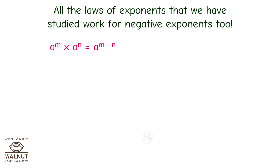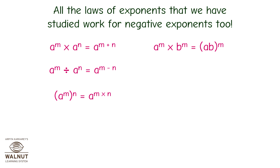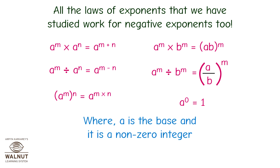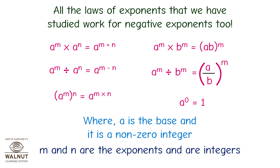The laws are: a raised to m into a raised to n equals a raised to m plus n; a raised to m divided by a raised to n equals a raised to m minus n; a raised to m whole raised to n equals a raised to m into n; a raised to m into b raised to m equals ab whole raised to m; a raised to m divided by b raised to m equals a upon b whole raised to m; and a raised to zero equals 1, where a is a non-zero integer and m and n are integer exponents.